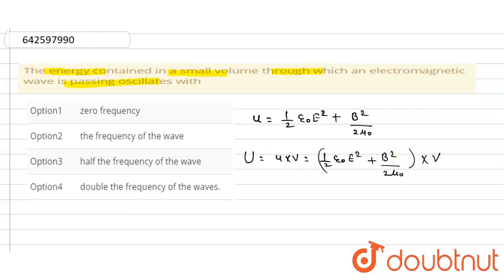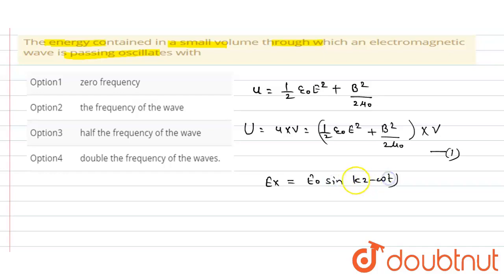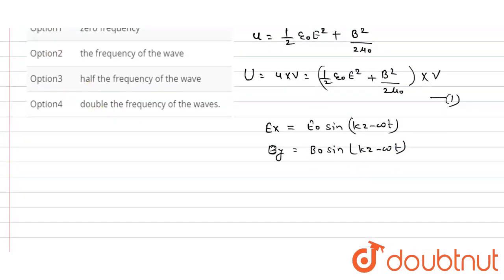Let this be equation number one. Let the direction of the electromagnetic wave be along the z-axis. Then the electric and magnetic fields at a particular point are given by: electric field along x-axis is E_x equals E naught sine of (kz minus omega t), and magnetic field along y-direction is B_y equals B naught sine of (kz minus omega t).